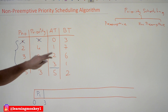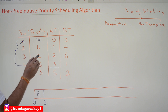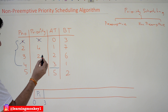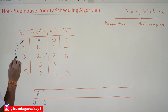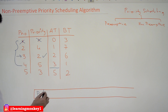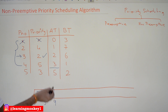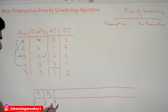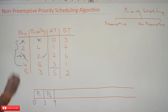Now, which process has to be chosen? The decision is based upon priority. Since the lowest number has the highest priority, process P3 will get selected. P3 has a burst time of six. At that point of time, all the processes have arrived and the execution of P3 is already done.